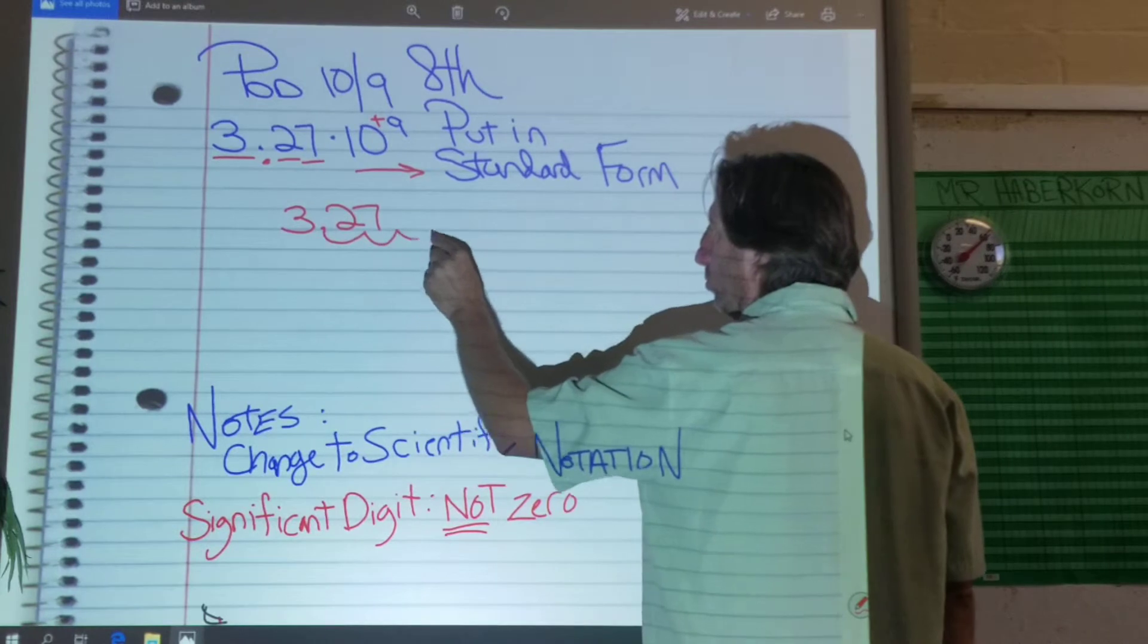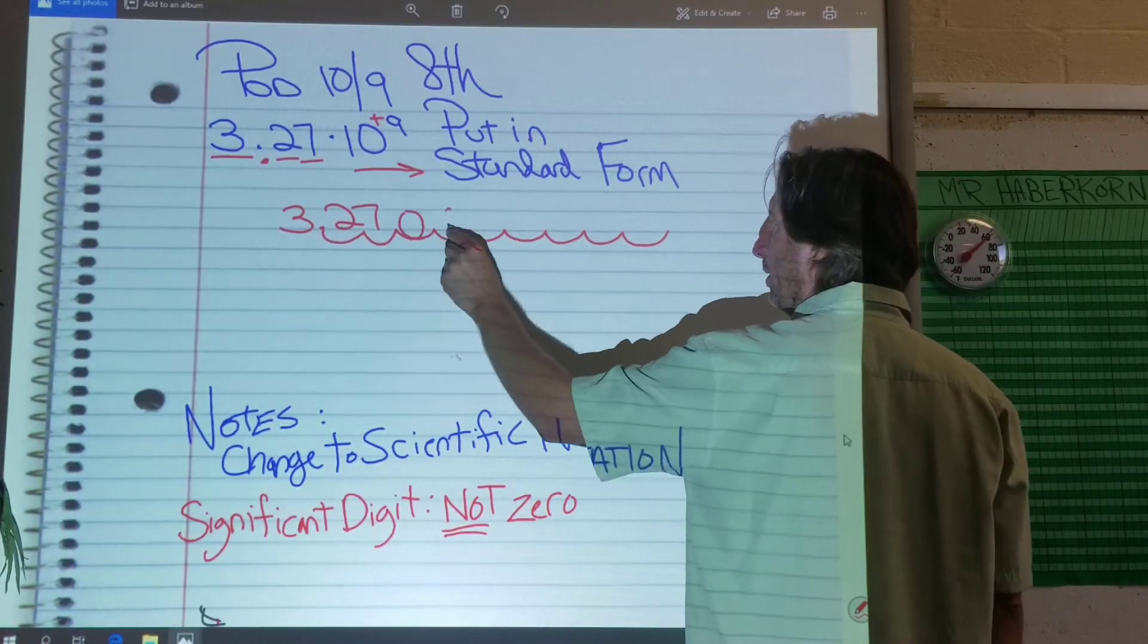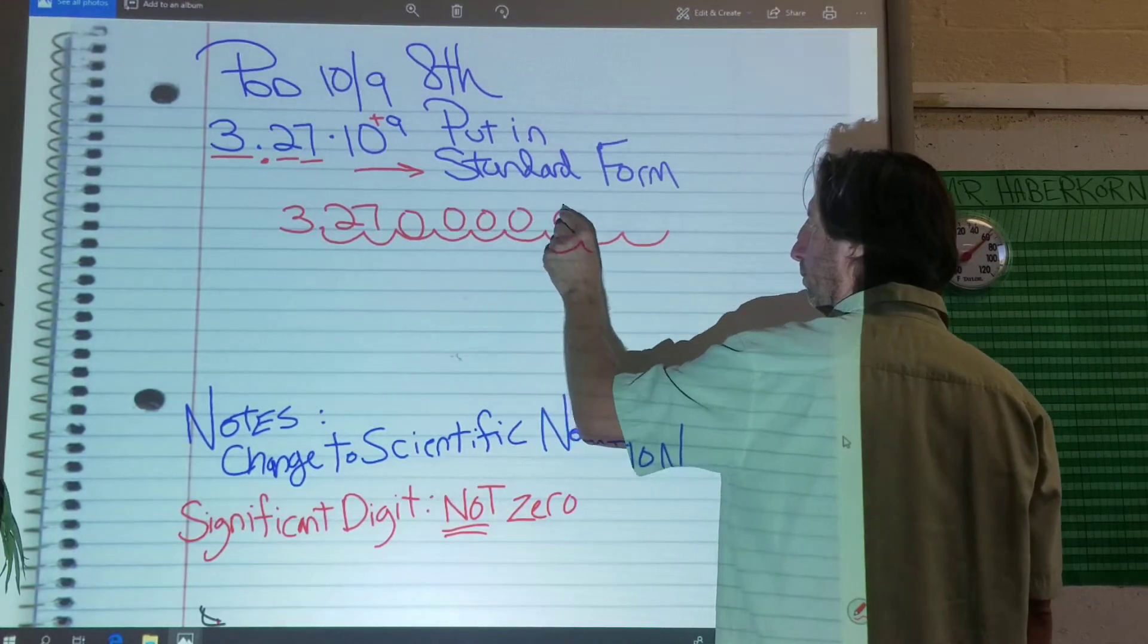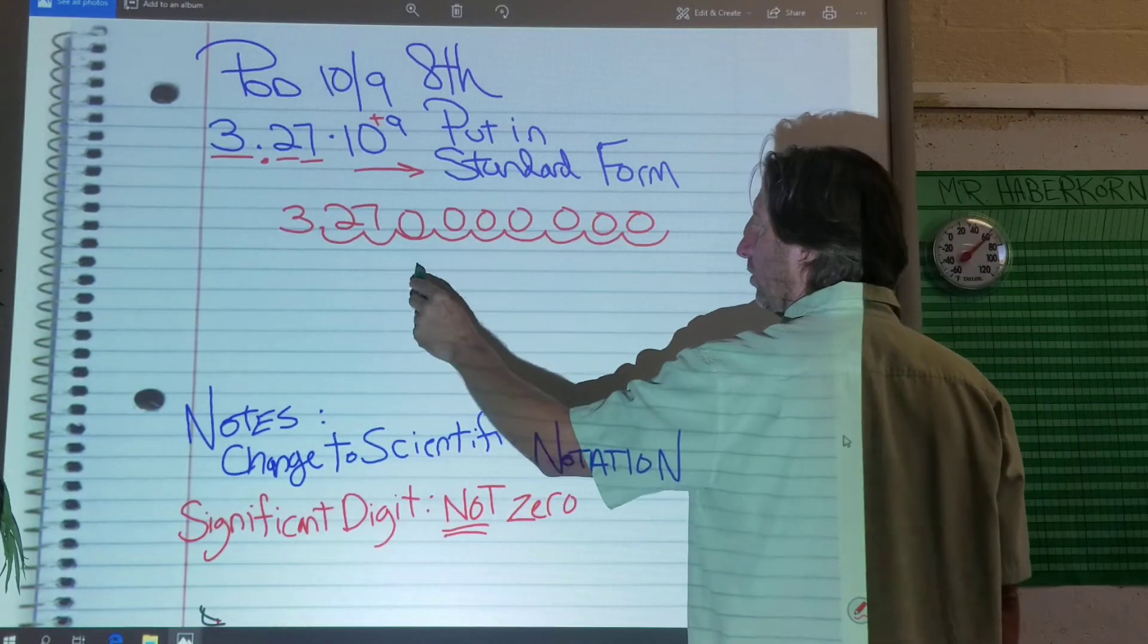People will try to trick you. So 1, 2, 3, 4, 5, 6, 7, 8, 9. In each loop, I'm putting a zero. My point's now at the end. So I have 1, 2, 3, 4, 5, 6, 7 zeros.